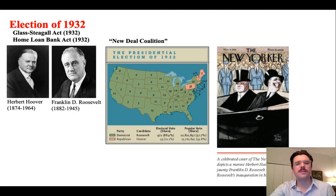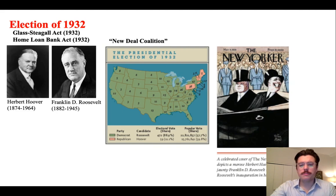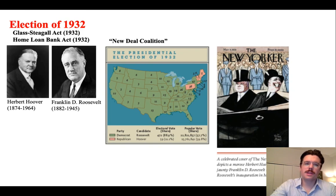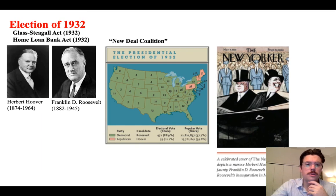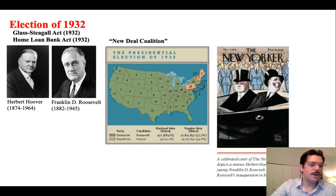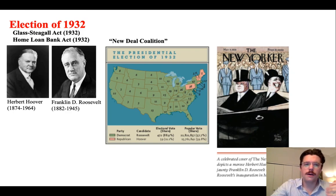Now you have the federal government stepping in and controlling many of these projects that were formerly controlled by states under Herbert Hoover. The election of 1932 is really a landslide in many ways. The last time we see Herbert Hoover is during the bonus army protests in 1932 on the eve of the election, when he essentially commands the U.S. military to forcibly evict veterans who are protesting on the National Mall, in which hundreds of veterans were injured.